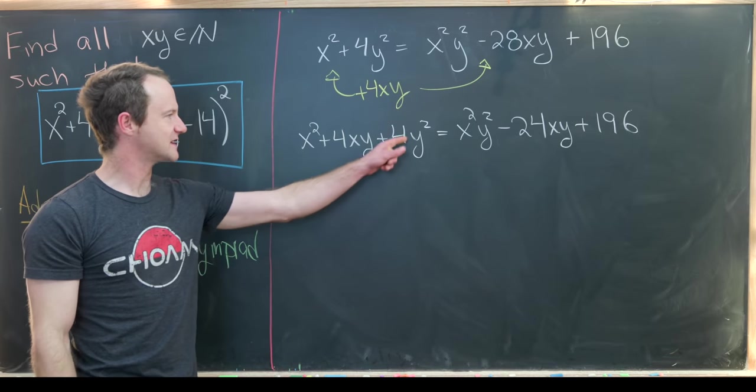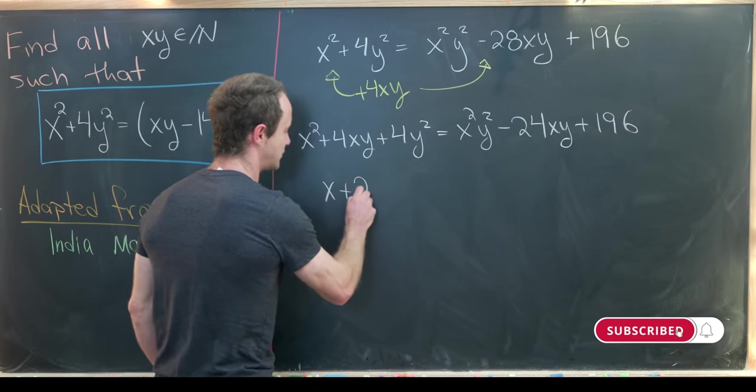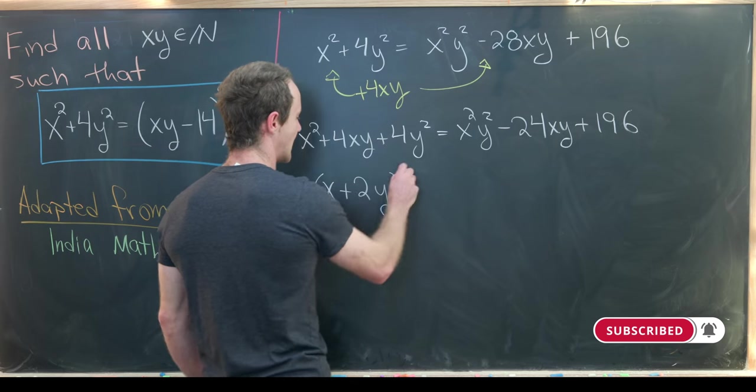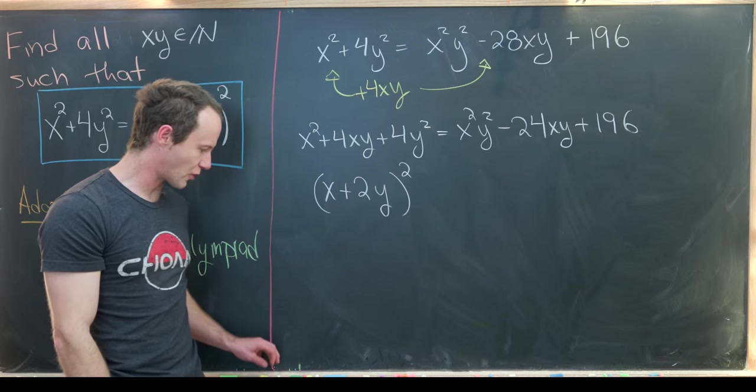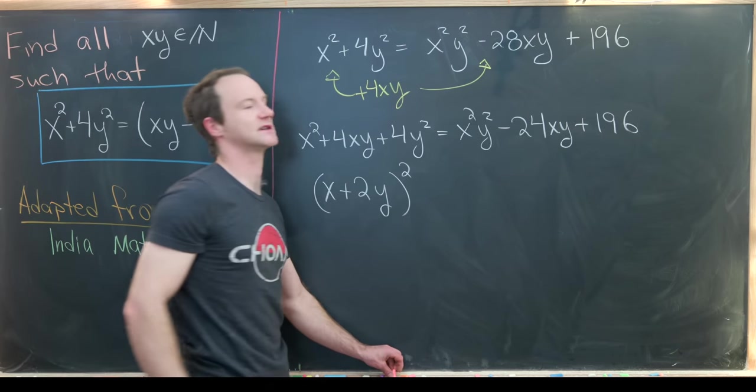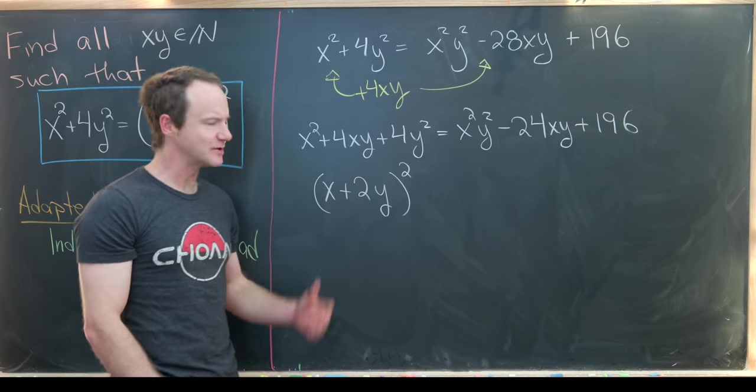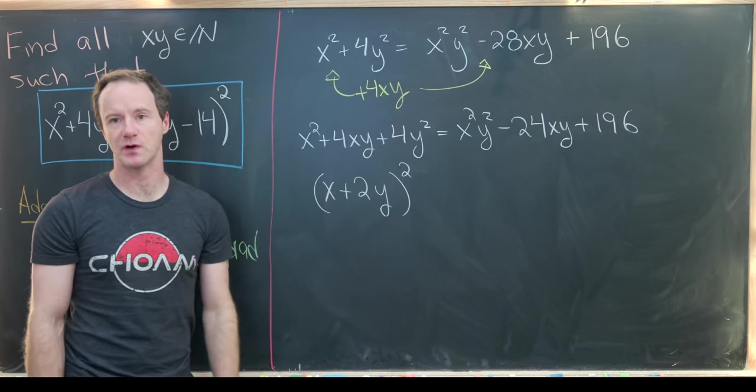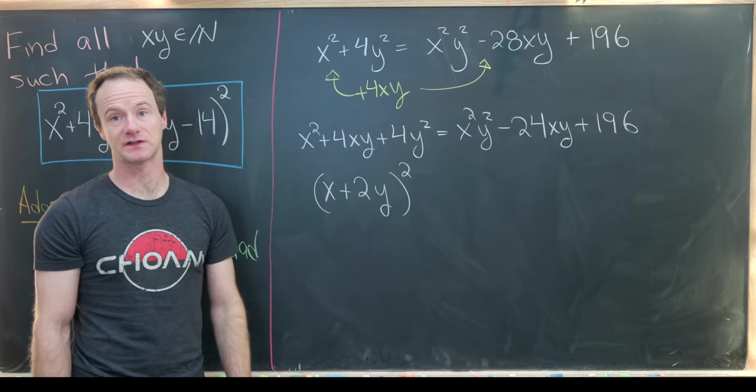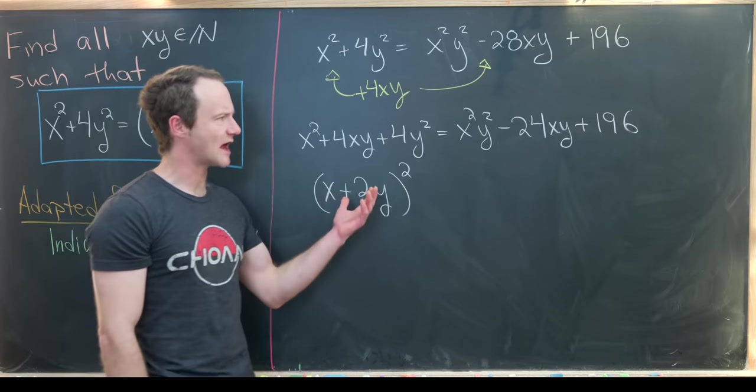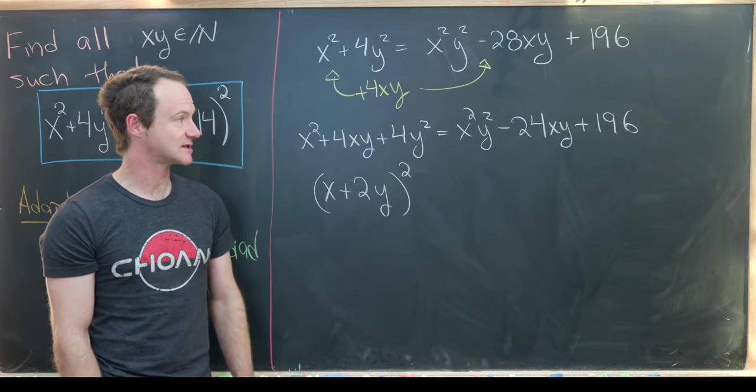This left hand side obviously factors. Notice it factors like x plus 2y quantity squared. Now we've got to decide what's the appropriate thing to do to the right hand side. Well if we could write that as a perfect square then we'd actually be good to go. We could take the square root of both sides. But if you look at this, this is not a perfect square. But maybe we could write it as a perfect square and then a constant and then see where that takes us.